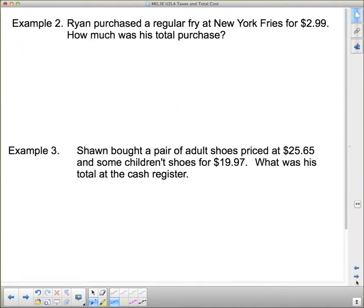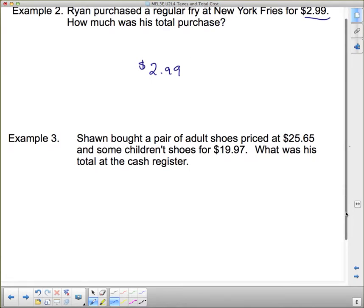Let's do a few more. With these ones we might have to pay careful attention to what we're buying because some of them might be tax exempt. Ryan purchased a regular fry at New York Fries for $2.99. How much was his total purchase? This one's a bit of a trick question. $2.99 for fries, that's under $4, so his total purchase was $2.99. Like I said, a little bit of a trick question. You have to know how the taxes are calculated.